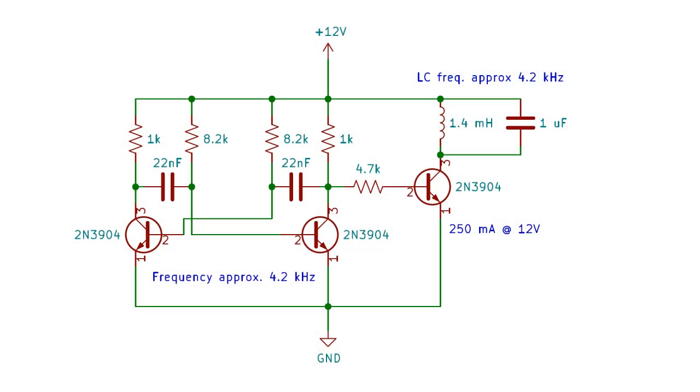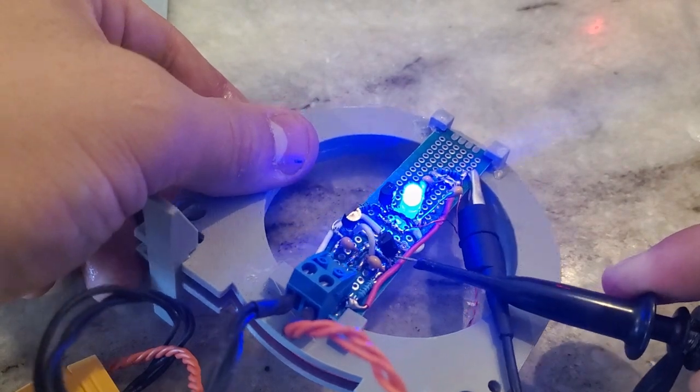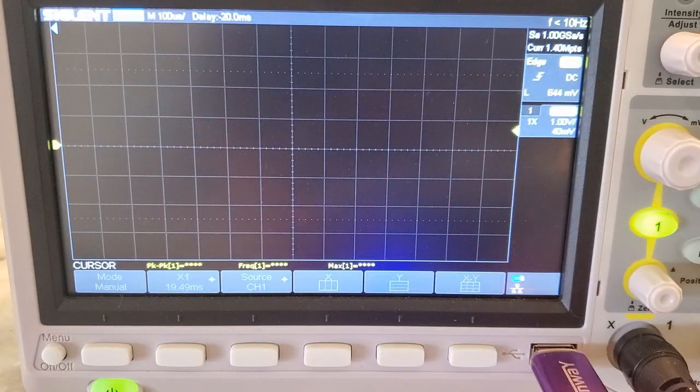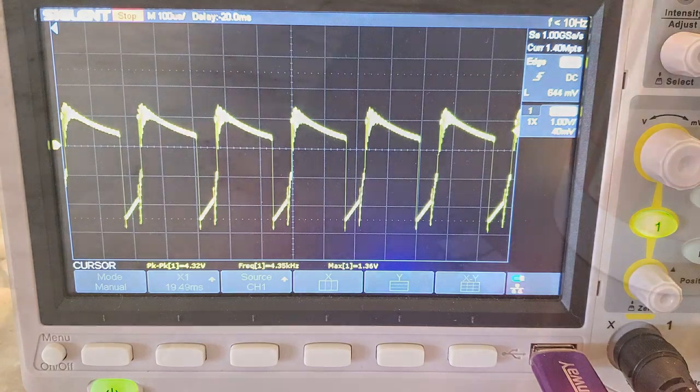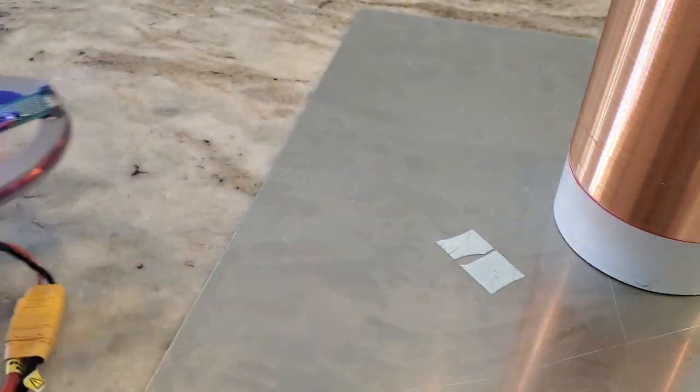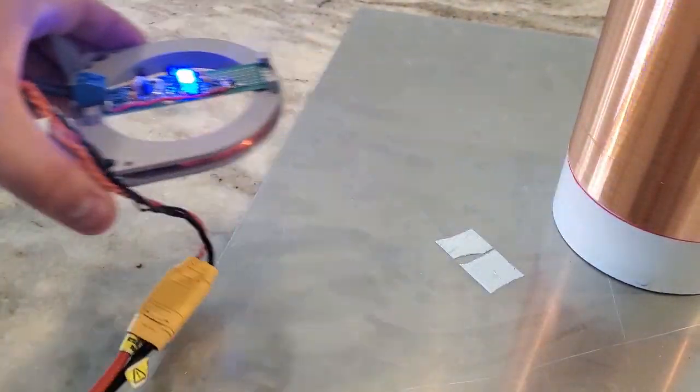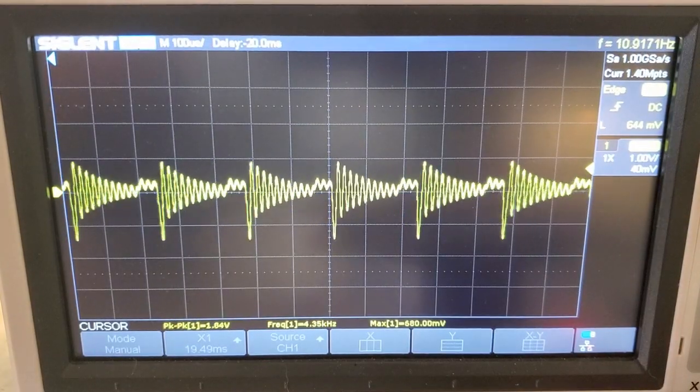It uses a flip-flop oscillator to drive a coil at about 4.2 kilohertz, which also has a capacitor in parallel with it to make it resonate at that same frequency for better efficiency. Here's what the output looks like on the oscilloscope. If I move the oscillator back and forth near the coil, you can clearly see the effect on the scope.